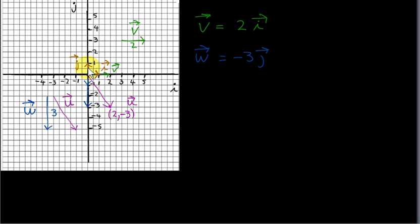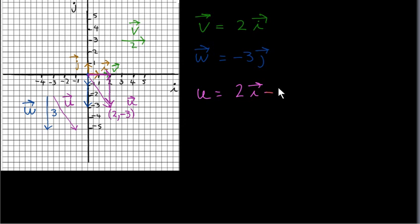We want to express u in terms of vectors i and j. You can see that if we add this horizontal vector onto this vertical vector, we will get vector u. We can add them by the triangle law, which was covered in the previous video. The horizontal vector is 2 times unit vector i. So u is equal to 2 times vector i, and we add onto it the vertical vector. Vector j points vertically upwards with a length of 1. If we switch it over, we have vector minus j, and we want 3 times vector minus j, giving us minus 3j. So we have 2i plus minus 3j, or just 2i minus 3j.